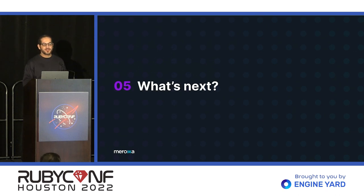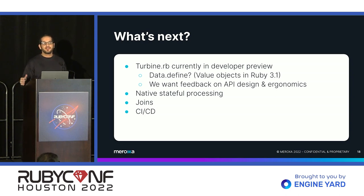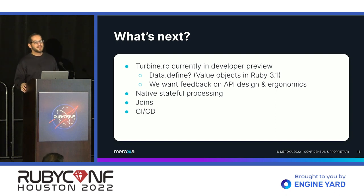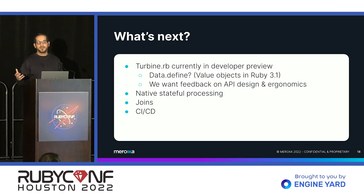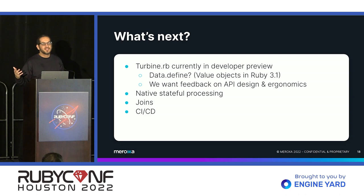What's next for Turbine and Maroxa? Right now, Turbine RB — Turbine for Ruby — was recently created. It's still in relatively early developer preview and we're looking for feedback. We want people to use it, try it out, and tell us how to improve it. We're super focused on developer experience. One thing relatively recent for us: Ruby 3.1 introduced the idea of a value object or the data class, which introduces an immutable struct. That seems like it would be pretty good for this kind of use case where records come in as immutable objects and you use methods defined on them to manipulate them — something we'd like to consider.